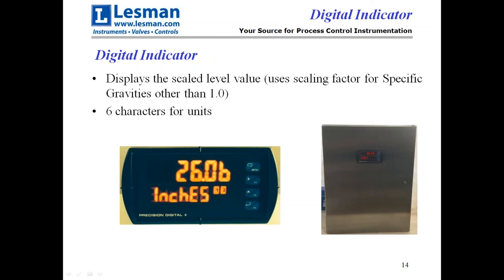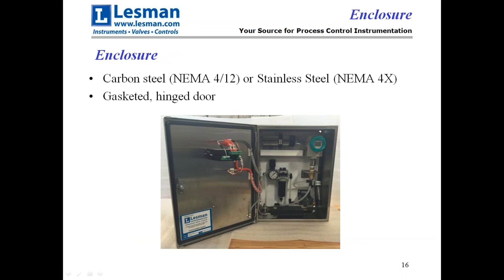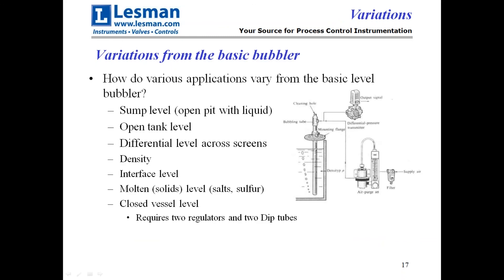The digital indicator has both digital numbers and a scale in inches, feet, or millimeters — whatever you need. There are six characters for units so you can be very clear about what you're measuring. The panel heater at the bottom keeps it from freezing in wintertime; it's thermostatically controlled so it doesn't waste energy in summer. The enclosures are either carbon steel or stainless steel, with a gasketed hinged door giving you NEMA 4 or NEMA 4X. This comes to you with all components mounted, wired, and ready to go.